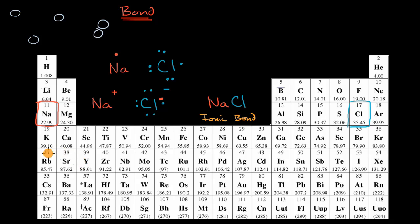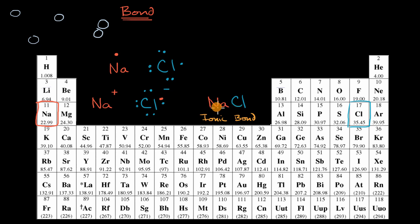In a previous video, we introduced ourselves to the idea of bonds and the idea of ionic bonds, where one atom essentially is able to take electrons from another atom, but then because one becomes positively charged and the other becomes negatively charged, they get attracted to each other. Now we're going to go to the other end of the bonding spectrum, where instead of stealing electrons from each other, we're going to share them.